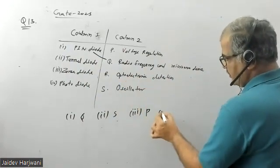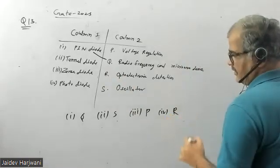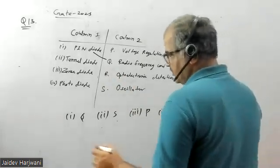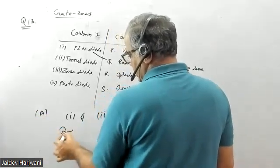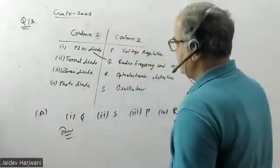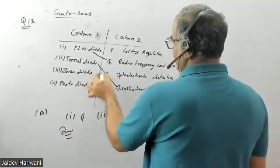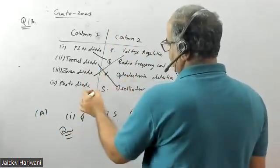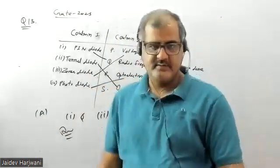So we can write 4 for R. So this is given as option A, and this is the correct answer for this question. You can write tunnel diode is oscillator, Zener diode is voltage regulation, photo diode is for optical detection. Thank you very much.